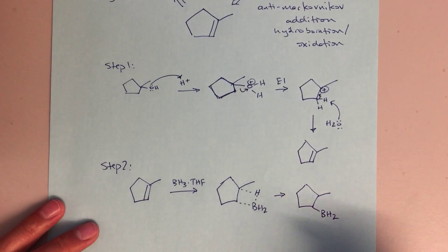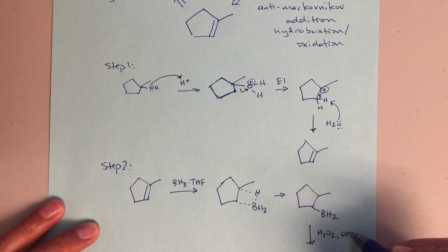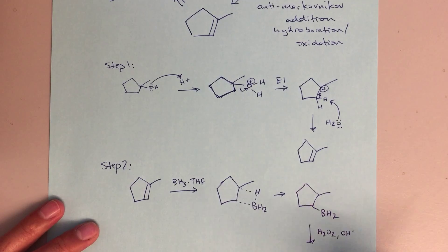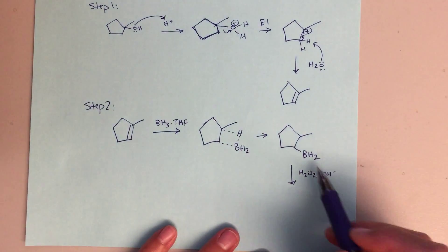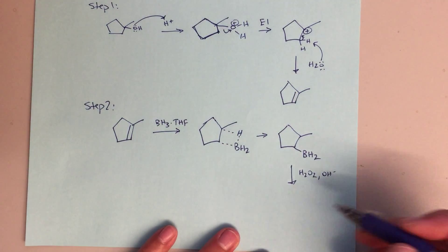From here it's a simple oxidation. H2O2 and OH- are the conditions that we're going to show for that, and that's just going to take this BH2 group and turn it into an alcohol.